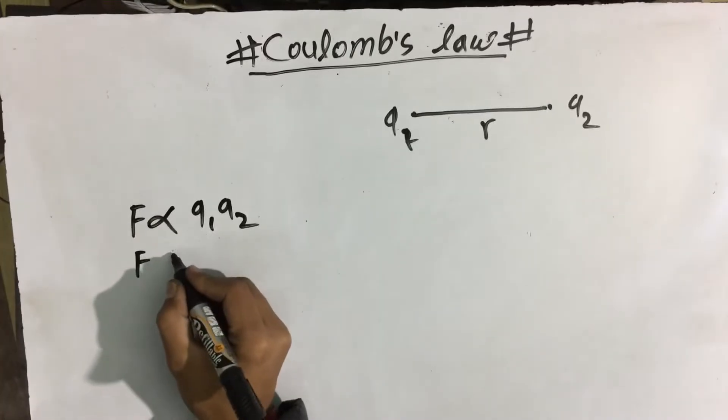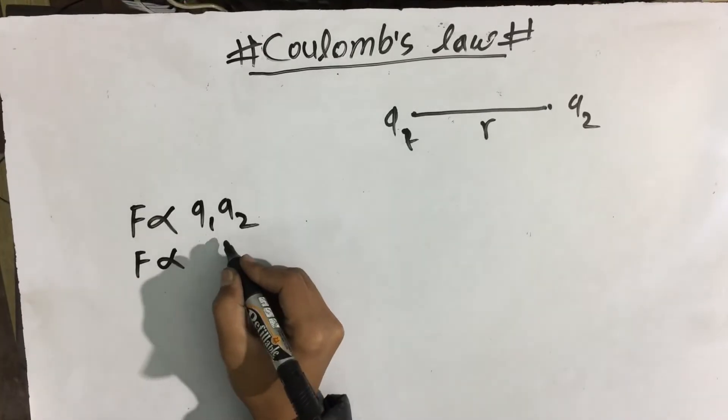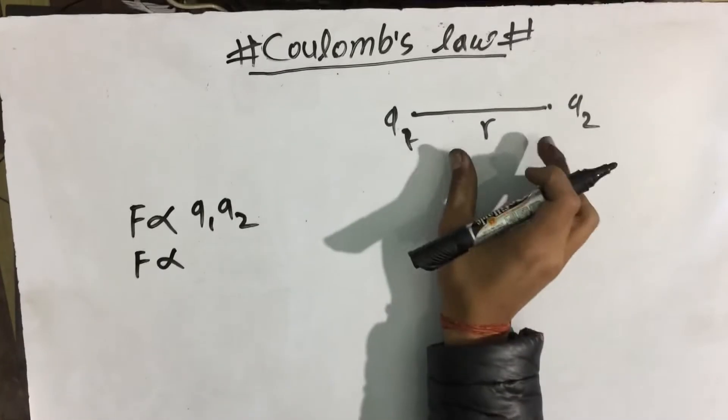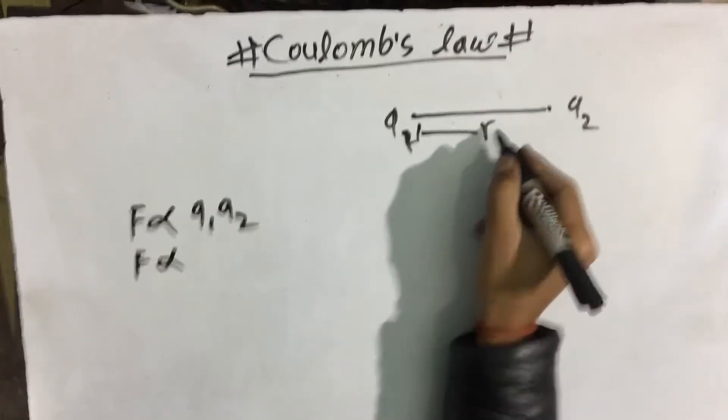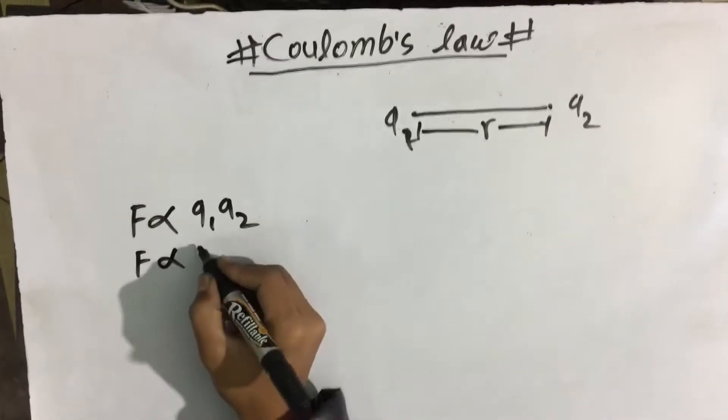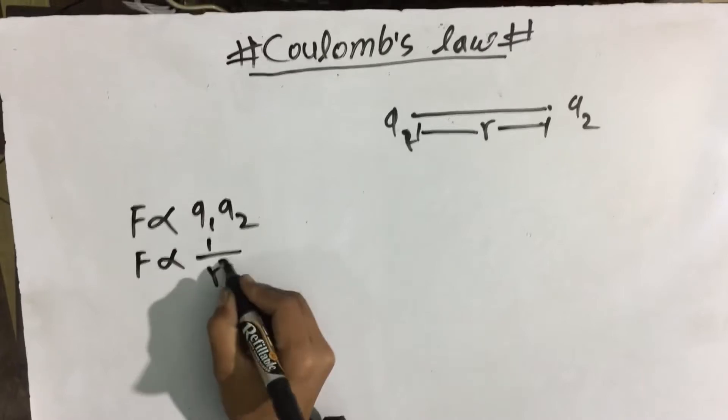Force is inversely proportional to the square of the distance, so 1 by R square.